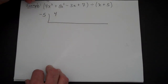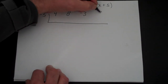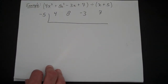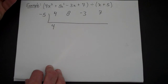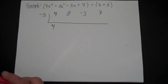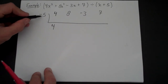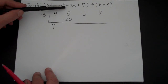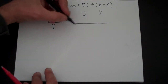So for x cubed you put 4, for x squared you put 8, for x that's a minus 3, and that's a 7 — nothing missing. So that's x³, x², x, and the constant. Now the first thing you do is take this first number and just write it right there. Then you multiply: negative 5 times 4 is negative 20. Now rather than subtracting like you did in polynomial long division, you're going to add. So 8 plus negative 20 is minus 12.